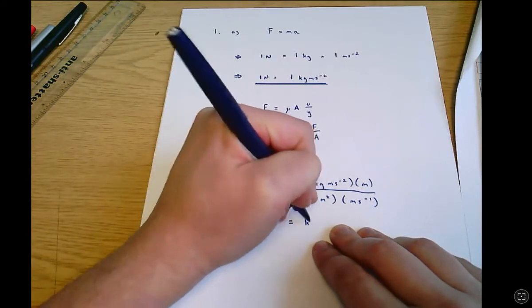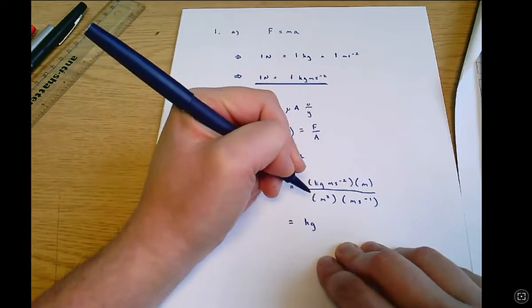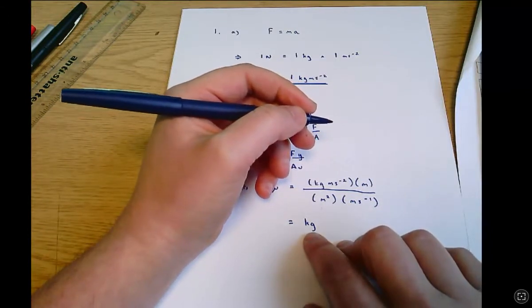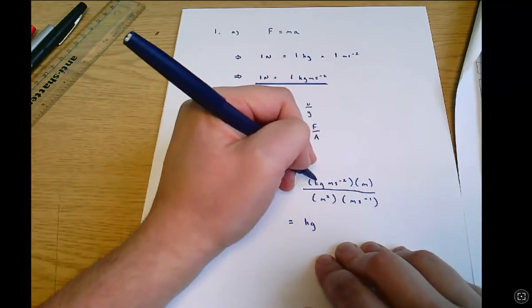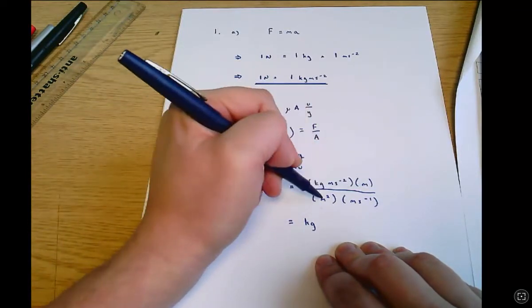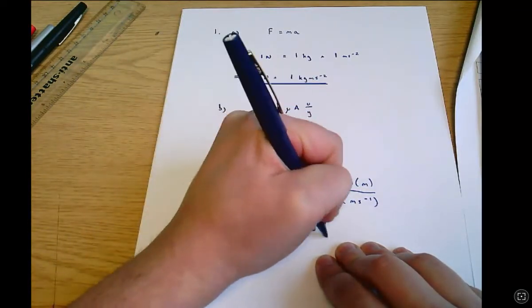Following this through if I gather up all the kilogram terms first I've just got one lot of kilograms on the top line that's this term here. Meters I've got meters times meters on the top line, meters squared times meters on the bottom line, meters squared divided by meters cubed that gives me.